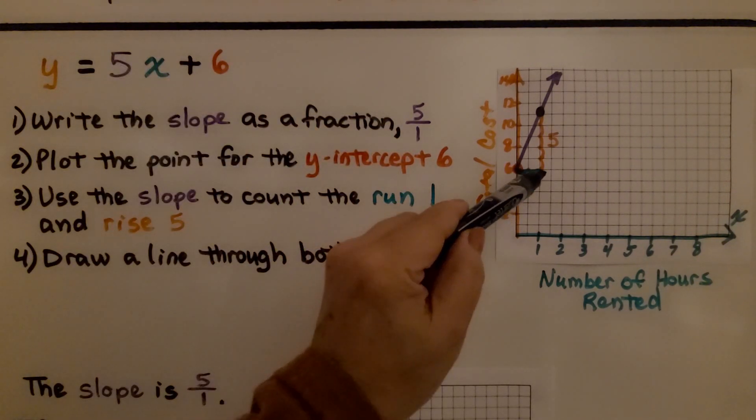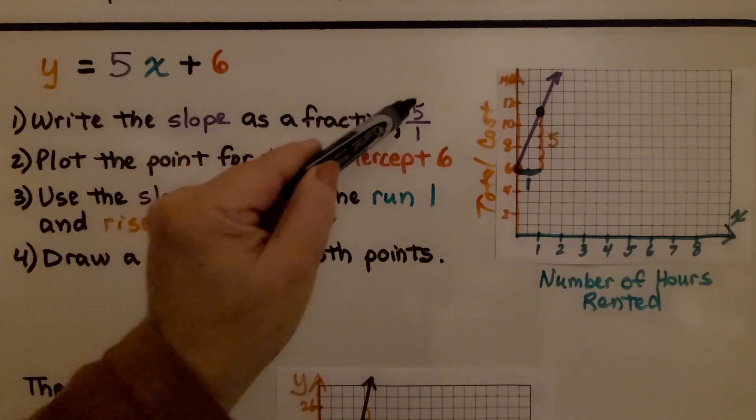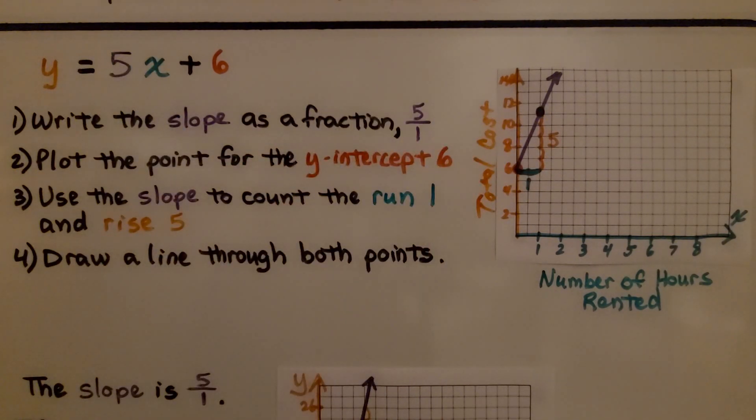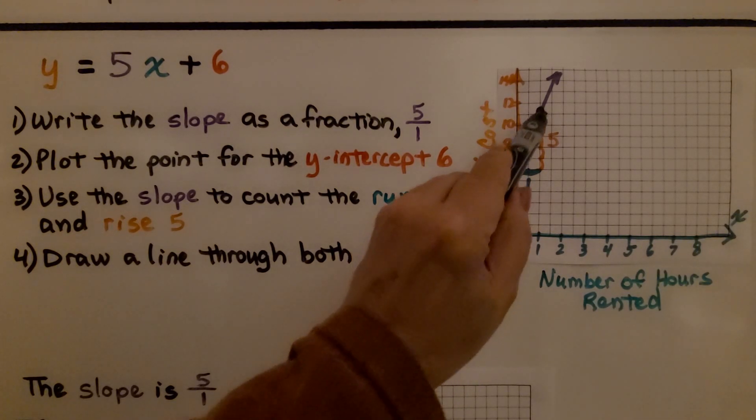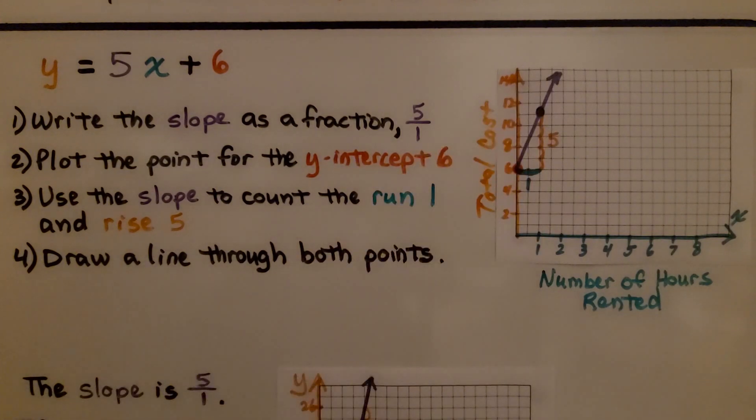So we come over 1 and we go up 5, because it's a positive 5. We're going to go up. And we draw a line through those points. So we draw a line from this point through this point, and we have it continue on.